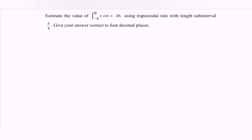So here given the situation, h is equal to pi over 4. Give your answer correct to 4 decimal places. So number 1, we have to construct the table.